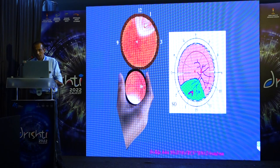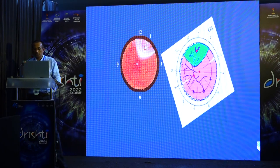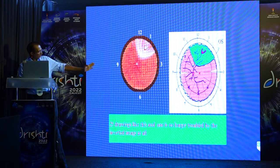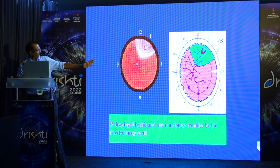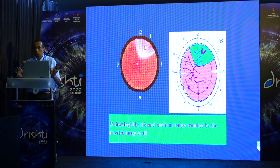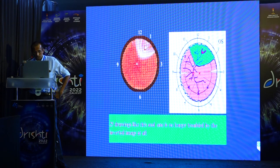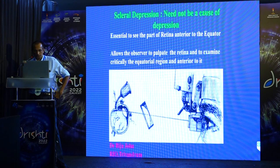Once you have drawn all four clock positions, re-invert the fundus chart and you have an exact replica of what you have seen. Just keep doing these drawings and within no time you will become an expert in indirect ophthalmoscopy.